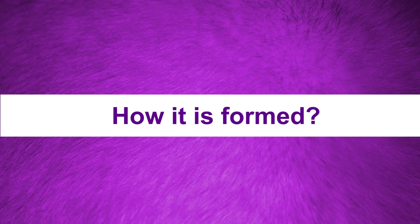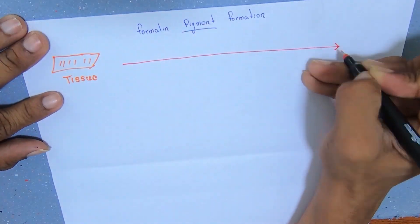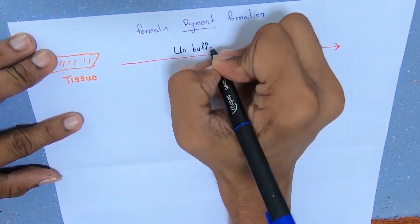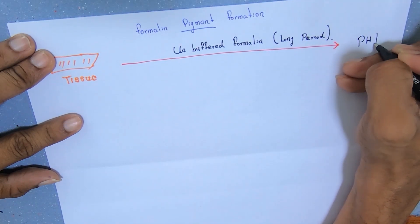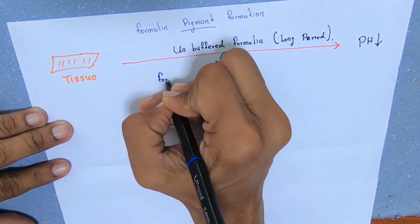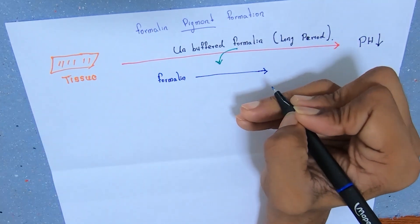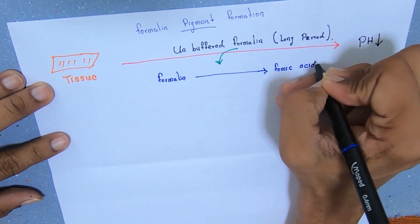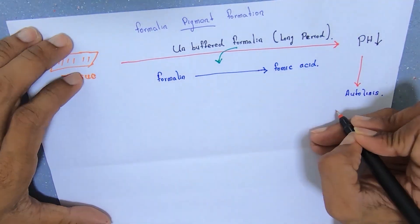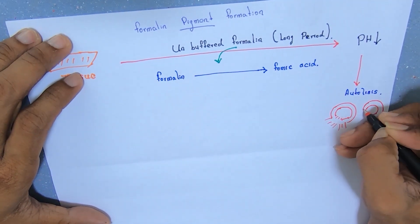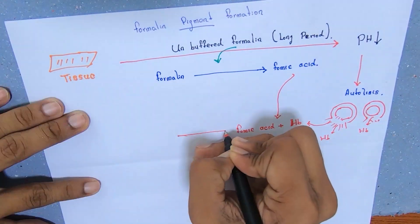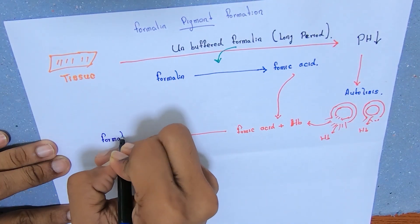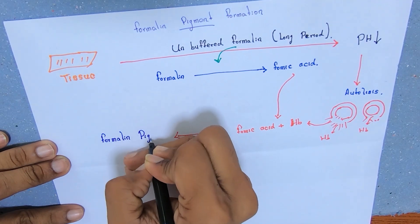Let's see how it is formed. When tissues are preserved in buffered formalin for a long duration, the pH will decrease due to oxidation of formalin to formic acid. Acidity enhances autolysis, and formic acid reacts with hemoglobin in red blood cells, precipitating acid formaldehyde hematine, also known as formalin pigment.